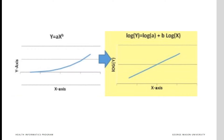If the dependent variable is a function of the independent variable taken to a power, then the log of the dependent variable will be linearly related to the log of the independent variable. The left-hand side shows the relationship between y and x before transformation — it is not linear. The right-hand side shows the same relationship now between log of y and log of x. Now it is linear. This example shows the importance of transforming the data before doing a linear regression.